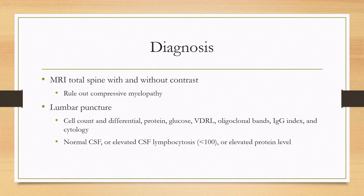In terms of diagnosis, you'll want to get an MRI of the total spine with and without contrast. This will make the diagnosis and also rule out compressive myelopathy, which can be a common cause of spinal cord lesions causing similar symptoms. A lumbar puncture is also needed, including a cell count and differential, protein, glucose, VDRL looking for syphilis, oligoclonal bands and IgG index looking for multiple sclerosis, and cytology looking for cancer. The CSF can be normal, or there can be an elevated lymphocytosis usually under 100, or an elevated protein level.